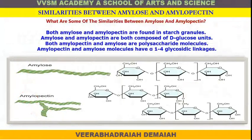Both amylose and amylopectin are found in starch granules, and both are composed of D-glucose units. This is a straight chain structure for amylose, and this is a branched chain structure for amylopectin.